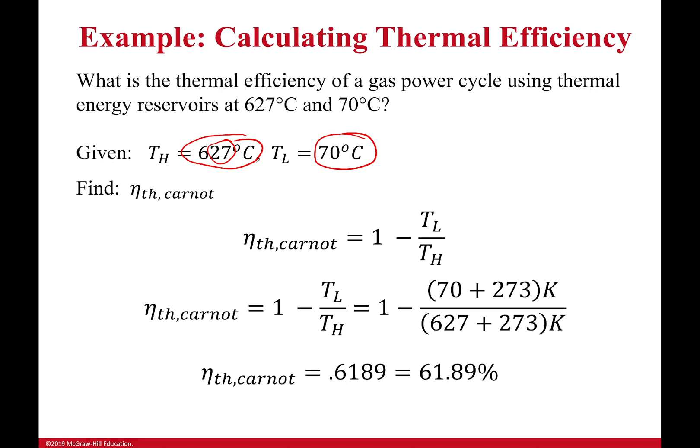So, the Carnot efficiency is 62%, which is saying the absolute best system in the world could only be 62% efficient. So, if somebody tells you it's 65% efficient for these settings, they're lying. It can't happen. It's impossible.